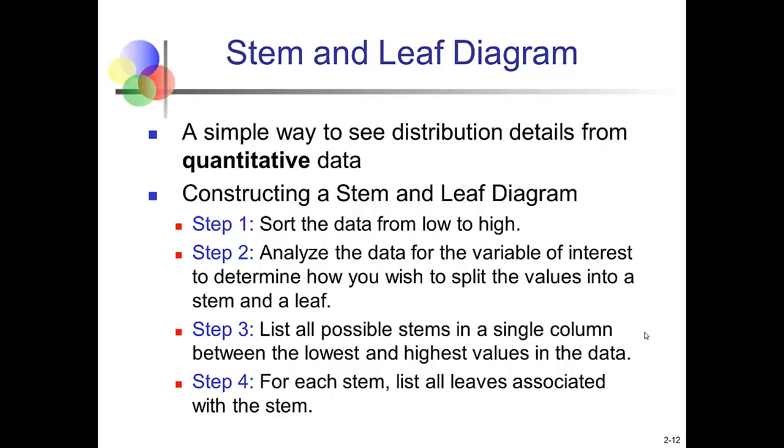A stem and leaf diagram is probably new to most of you. We use a stem and leaf diagram to see distribution information from a quantitative set of data. How is a stem and leaf diagram constructed? We start by sorting the data from low to high. We look at the data and say, okay, how are we going to split this data up? And by split the data up, I mean actually take each number and split up the numbers. Then we list all the possible stems in a single column from low to high. And we list all the leaves associated with each stem.